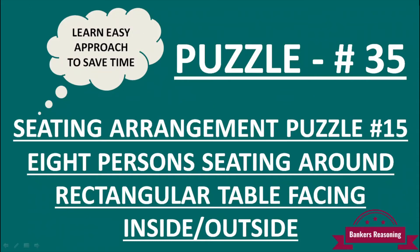Welcome to Banker's Reasoning Channel. Today we will solve puzzle number 35. This is a seating arrangement puzzle. In this puzzle, there are 8 people who are sitting on a rectangular table, and their directions are inside or outside facing.